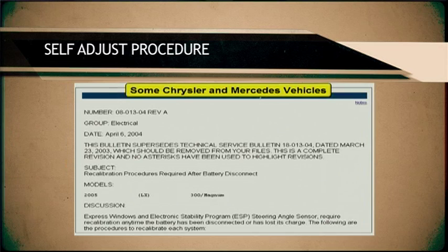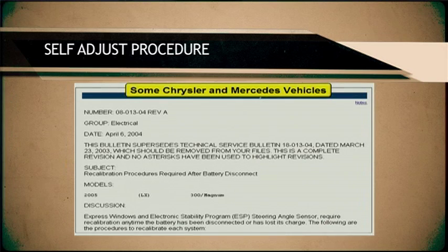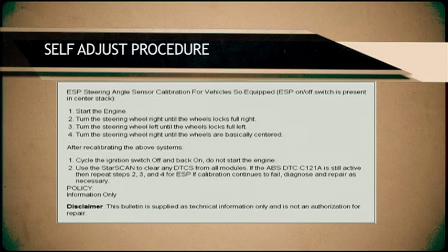The example I'm going to show you is from Chrysler — it happens to be from a bulletin. If the battery was disconnected, you're supposed to do the express window relearn, where you hold the switch down to relearn the express-up windows. But what we're going to focus on is that at the same time you're supposed to do a reset on the electronic stability control steering sensor. For Chrysler — and Mercedes-Benz is another common one — the procedure is simple: start the engine, turn the wheel to full lock right, turn to full lock left, then center the wheels, make sure there are no codes, and you're good to go.